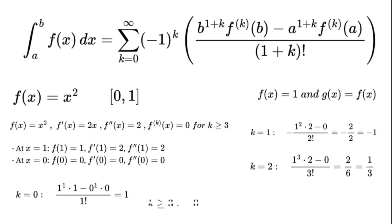For k greater than or equal to 3: 0. Summing them: 1 minus 1 plus 1 over 3 equals 1 over 3. That matches our earlier result for the integral from 0 to 1 of x squared dx equals 1 over 3. This formula is super handy for polynomials because the series stops when the derivatives hit 0.